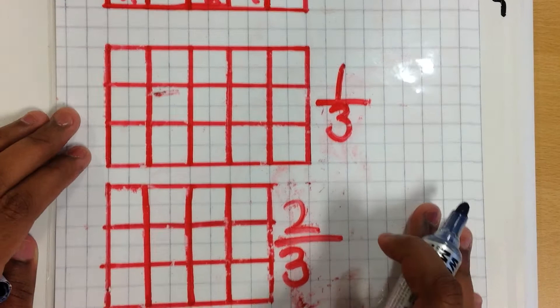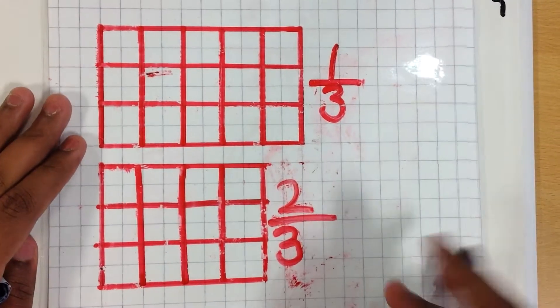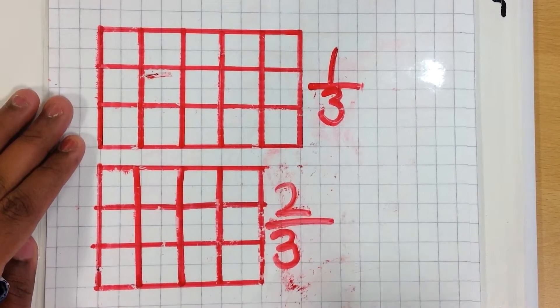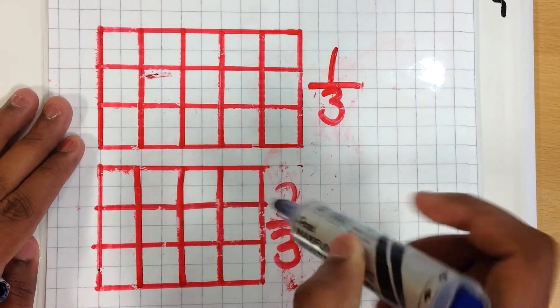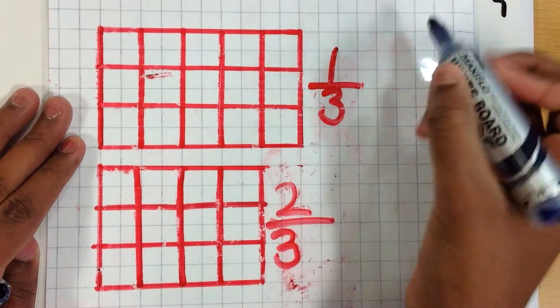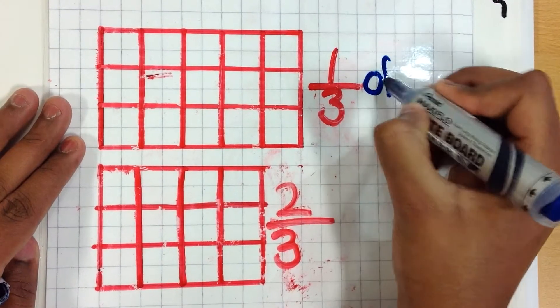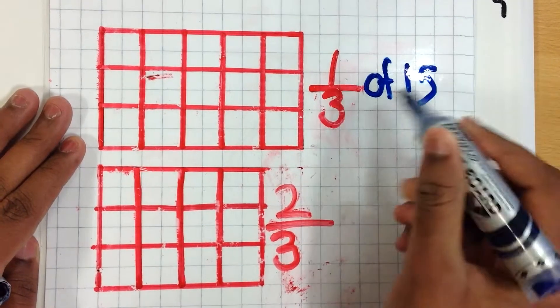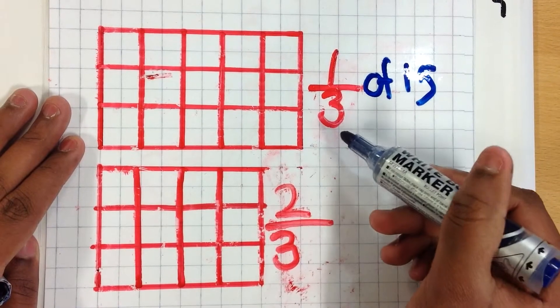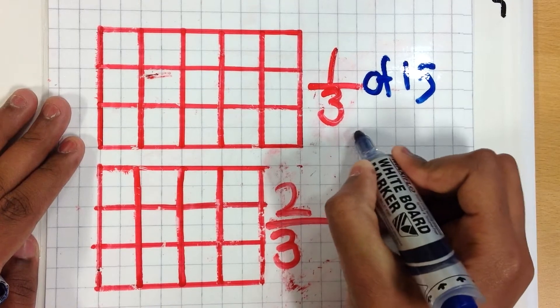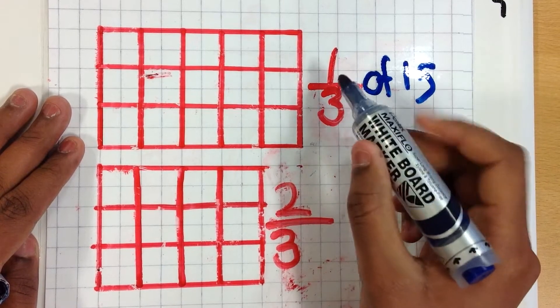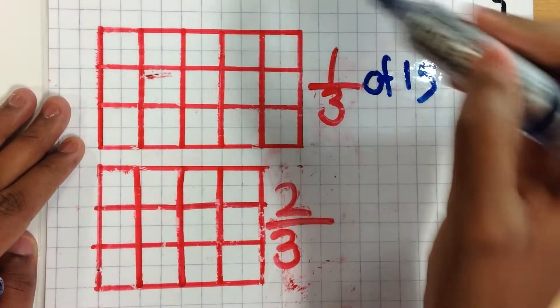So this one, you have to find out 1 third. So you do, you have to count out how many there are. It's 15 again. So you have to do 1 third of 15. So you have to do 15 divided by 3, which is 5. And you times it by the 1. So you have to shade in 5.